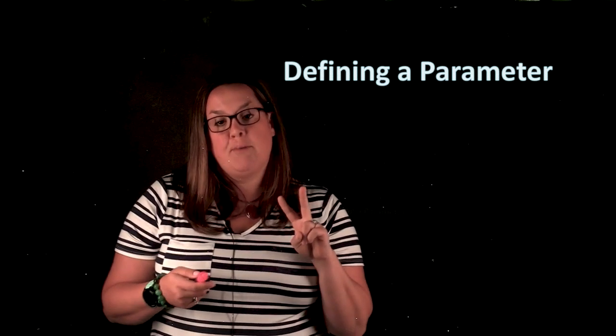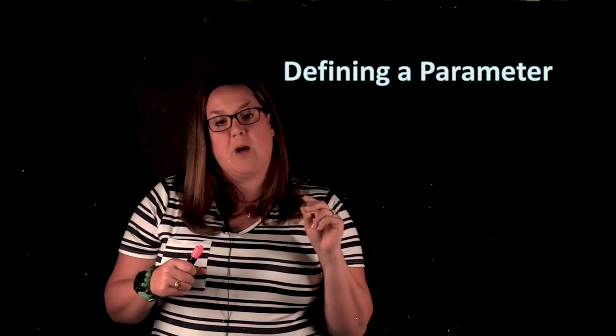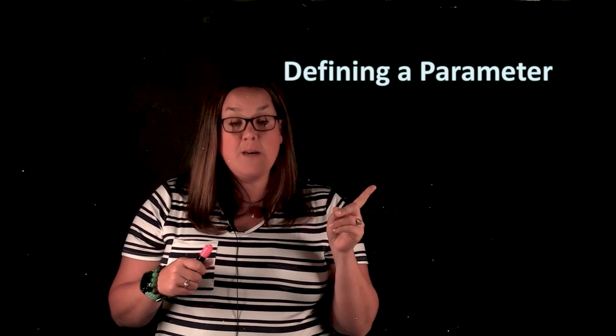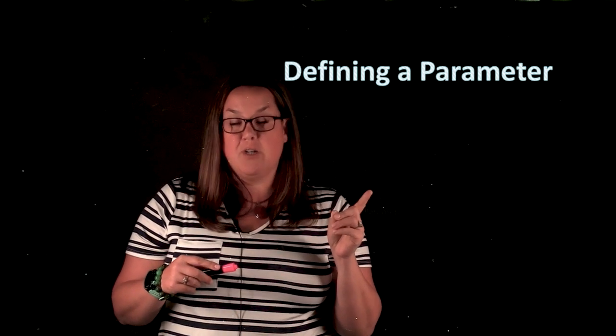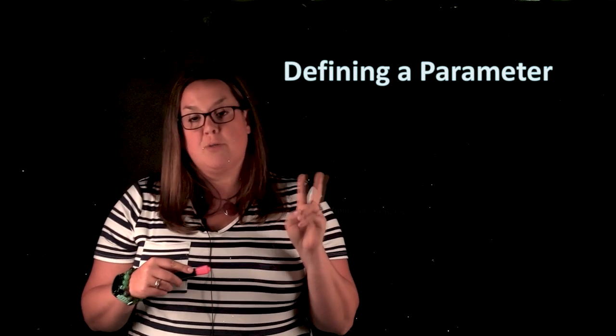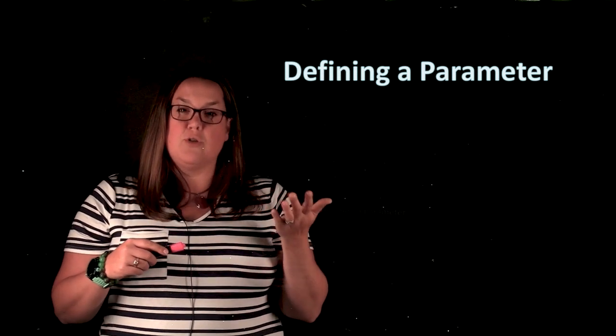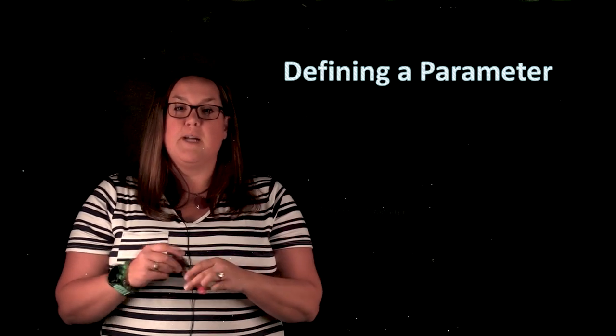So we have two parameters that we've been talking about. We talked about P, which is the population proportion, and we also talked about mu. So I'm going to talk about how to define those two measurements.